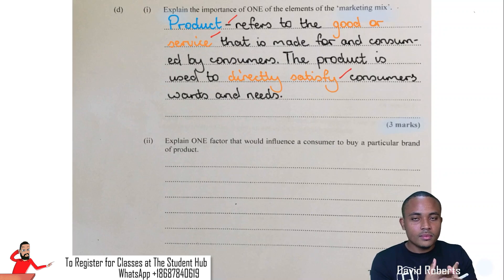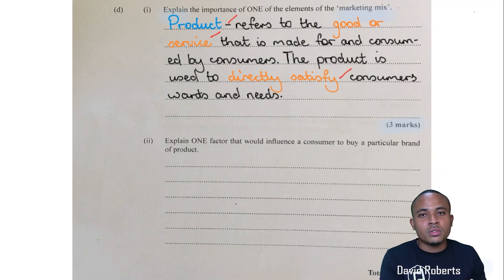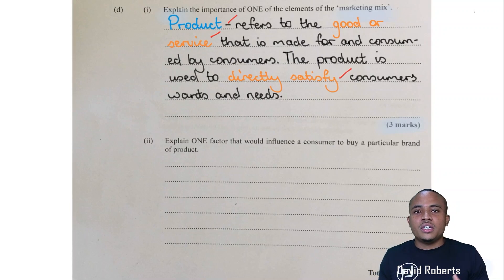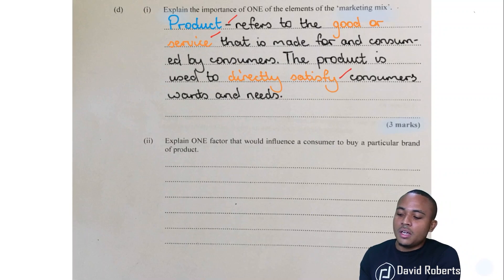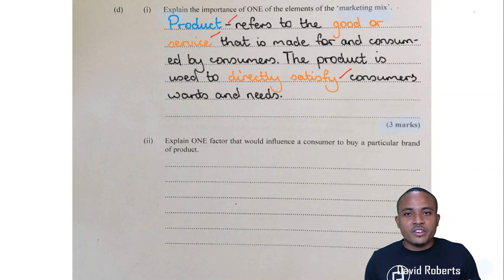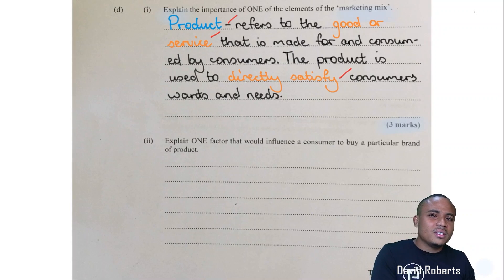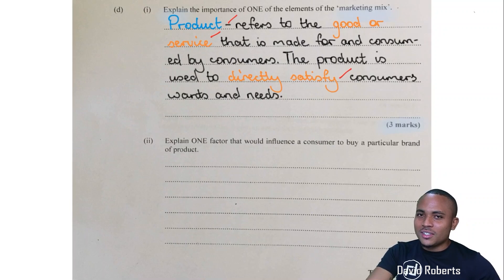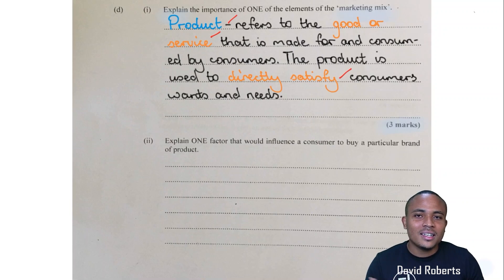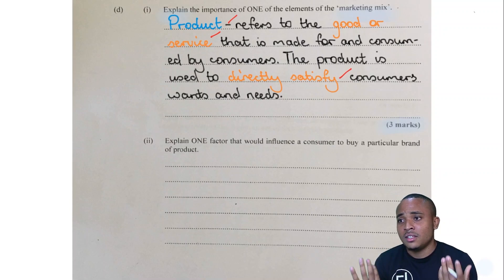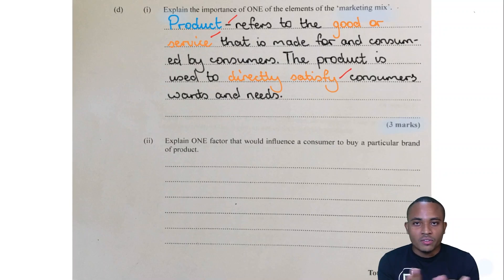Briefly covering the other marketing mix elements: price refers to the pricing strategy the business will use, and this determines how the business makes its profits and survives in the market. Place deals with the distribution channel — how goods move from manufacturer to consumer — and the channel determines how the business can make its profits.